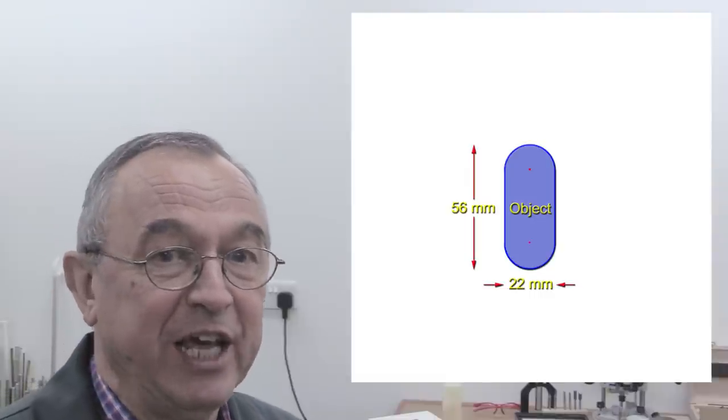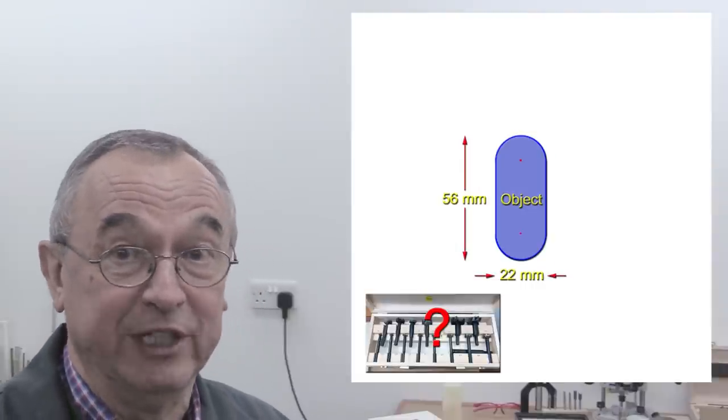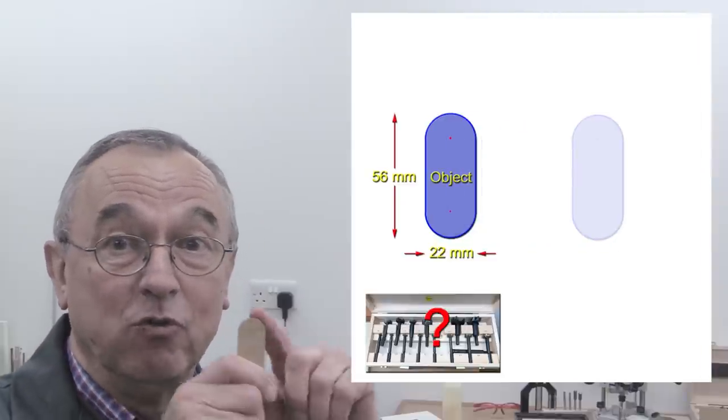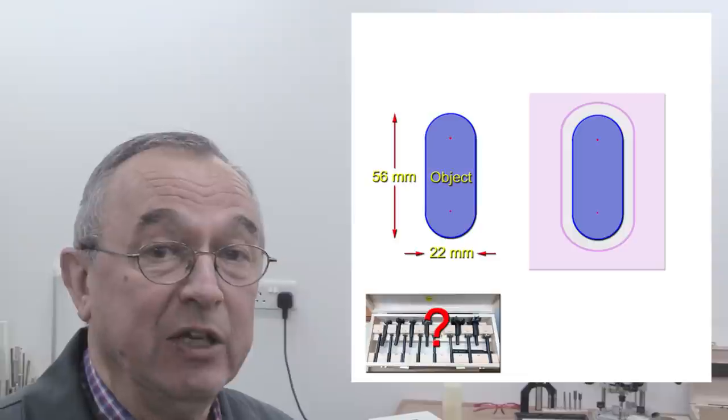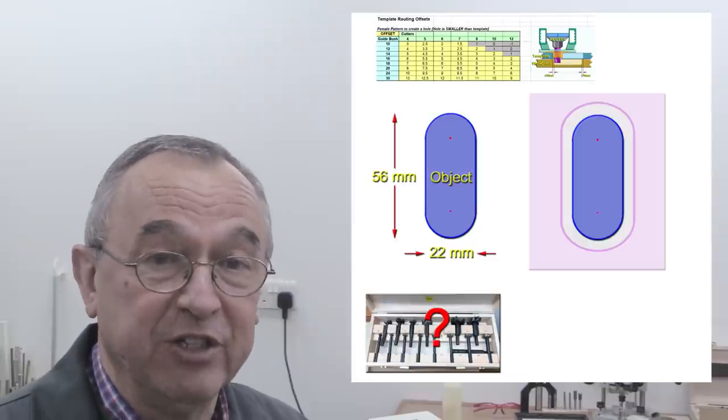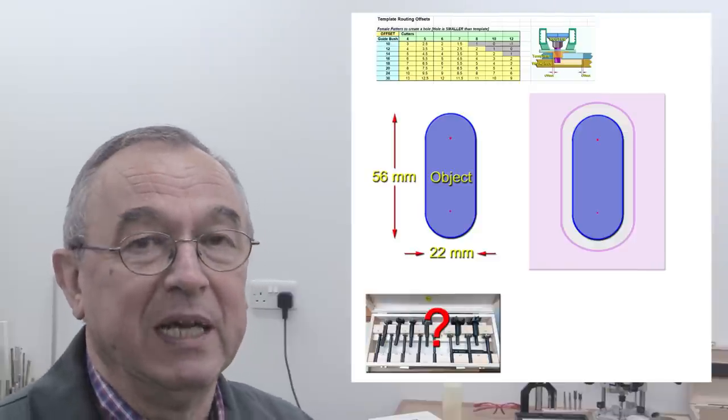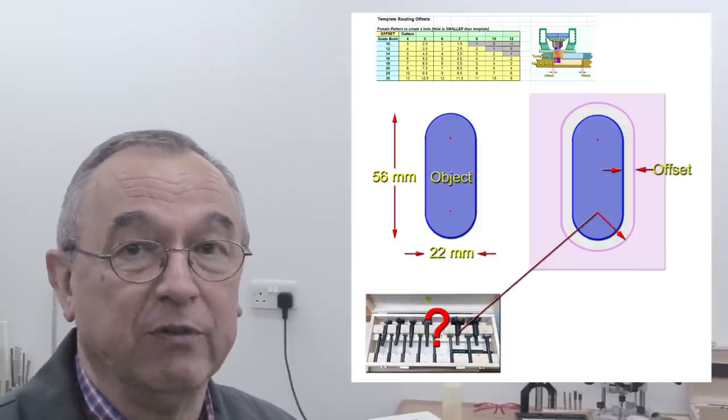Now, the template has to be made taking account of the available drills. Those are the Forstner drills we use to drill these rounded bits, and also the offset table that you've seen in the previous video. The offset table allows us to establish, for a given offset,